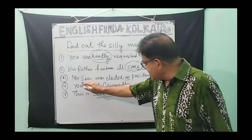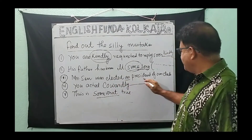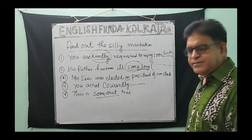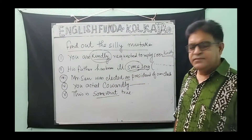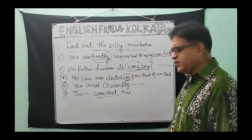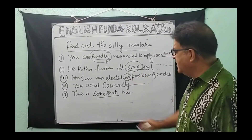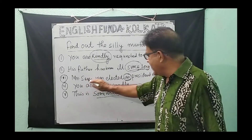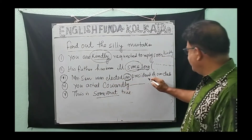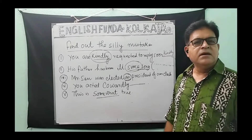Number three: 'Mr. Shane was elected as president of our club.' The word 'as' should never be used here. The correct sentence is simply: 'Mr. Shane was elected president of our club.'